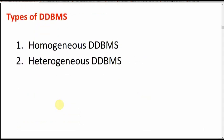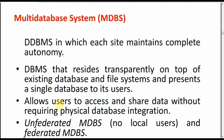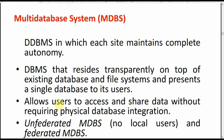We have different types of distributed database management systems: heterogeneous and homogeneous. Homogeneous is basically a setup using the same vendor tools, software, and hardware. Heterogeneous is a different scenario where you could have tools from different vendors. There is also the multi-database system (MDBS). To maintain complete autonomy, the database management system would be transparent among existing database and file systems, and should allow users to access and share data without requiring physical database integration - users are not even aware they are using a different local database access.